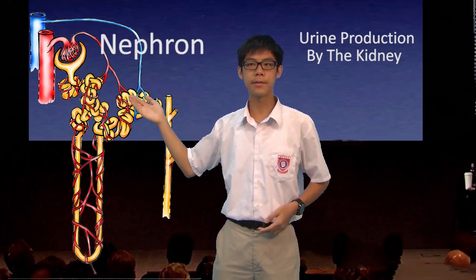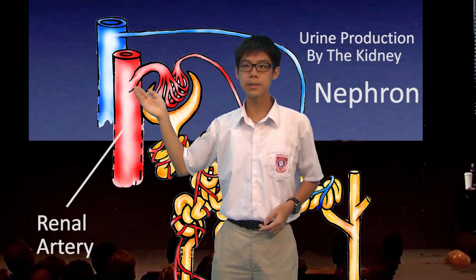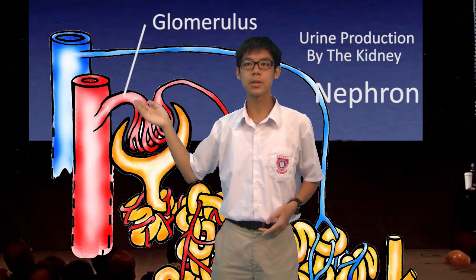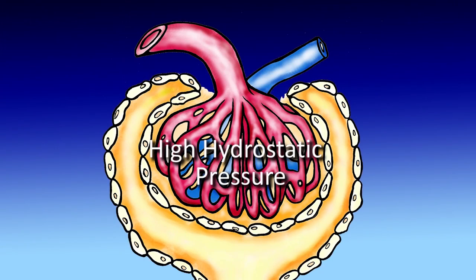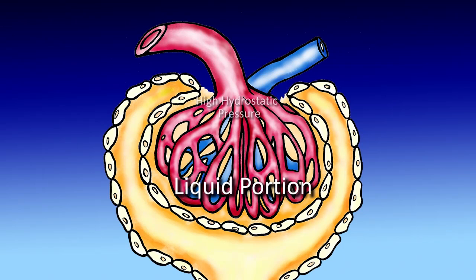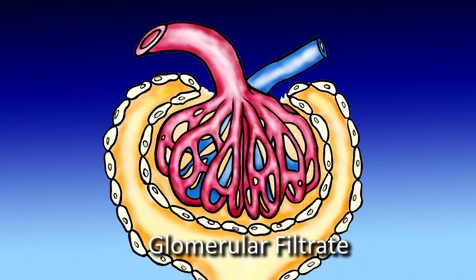Let's consider how the kidney works to produce urine. Our kidney is formed by millions of renal tubules called nephrons. When blood goes through the renal artery, the artery goes into the kidney. It enters the afferent arteriole and then the glomerulus, which is a ball-shaped capillary network surrounded by Bowman's capsule. Under high hydrostatic pressure, the liquid portion of the blood is forced to pass through the wall of the capillary to the Bowman's capsule to form a liquid called glomerulus filtrate.